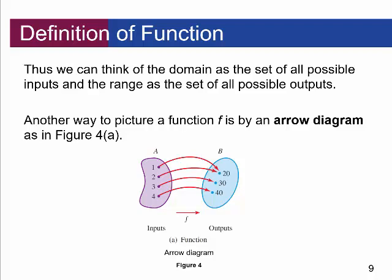Another way to picture a function F is by an arrow diagram. Here are the inputs — numbers 1, 2, 3, 4 — and here are the outputs. When I input 1, it maps to 20. When I input 2, it also maps to 20. Input 3 maps to 30, and input 4 maps to 40. This is a function because each input goes to only one output. It's okay that some inputs go to the same output — but each input must go to exactly one output.